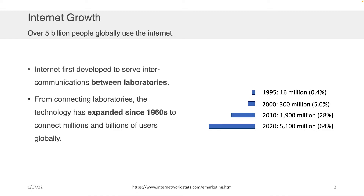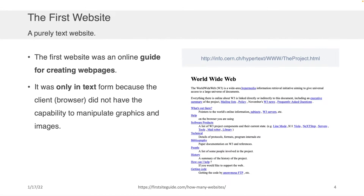Specifically, the number, as of 2020 at least, was about two-thirds of the Earth's population. That's grown a lot, actually, since even as early as the mid-90s, where it was less than 1% of the Earth's population — an incredible rate of growth for the Internet.